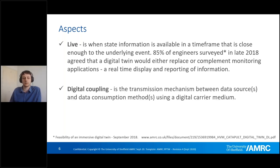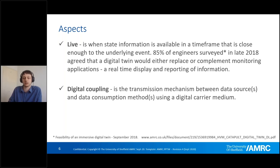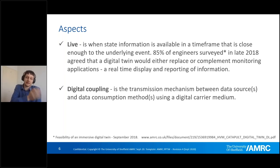Digital coupling: this is the difference between the first and second examples I gave. The transmission mechanism has to be digital. This could be a web request, a polling OPC UA structure, or something of that type — but as long as we're automatically gathering data and transmitting it, you have a digital coupling.